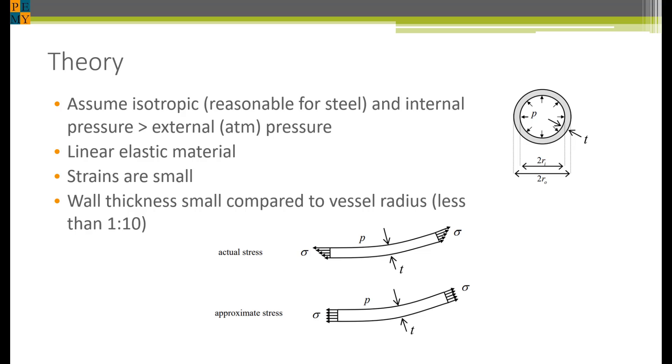For our purposes, the assumption is a material like steel is isotropic, meaning that its properties are the same no matter what the direction you're considering. It turns out that's an excellent assumption.